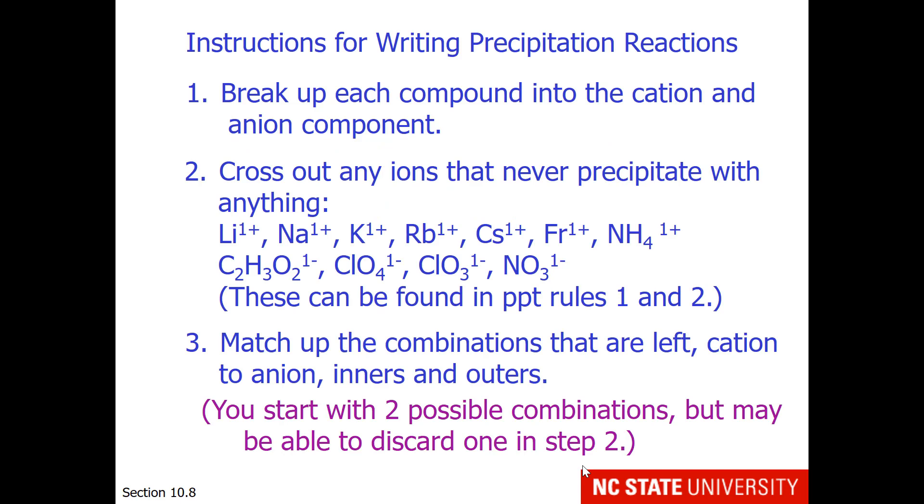First, break up each compound into the cation and anion component. Then, to make our work easy, we can cross out any ions that never precipitate with anything. So you can take out the ions in rules 1 and 2, and 1 and 2 only. Don't start taking out ions from rules 3 or 4, just 1 and 2.